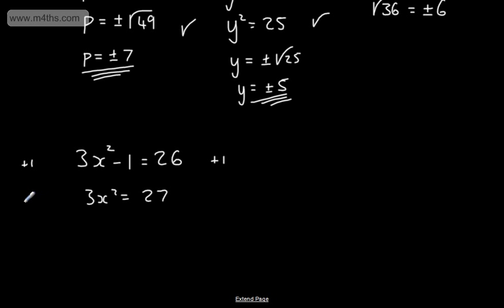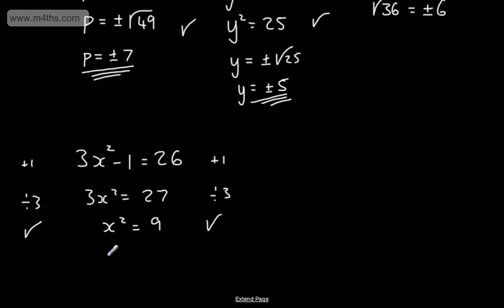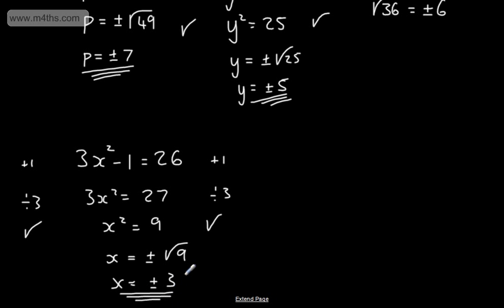Now I'm going to divide both sides of the equation by 3. That gives me x squared equal to 9. Taking the square root of both sides, x is equal to plus or minus the square root of 9, so x equals plus or minus 3.